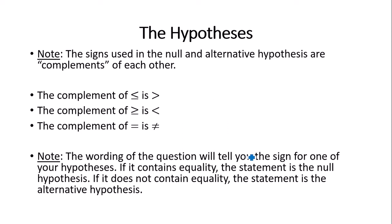The wording of the question will always tell you one of these signs — not always for one specific hypothesis, just one sign for one of the hypotheses. If the statement contains equality, it has to go with the null hypothesis. If it does not contain equality, the statement has to go with the alternative hypothesis.